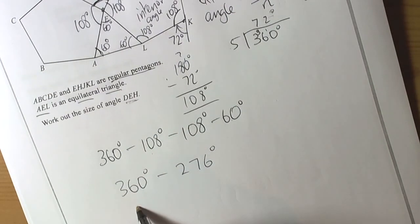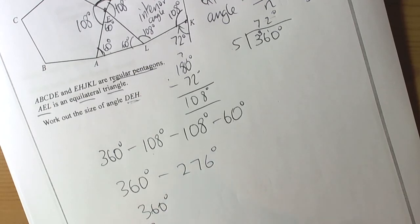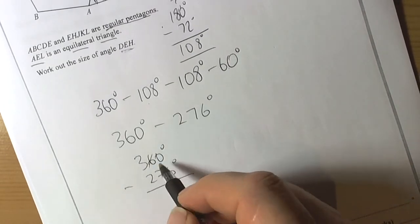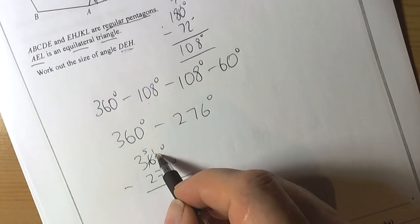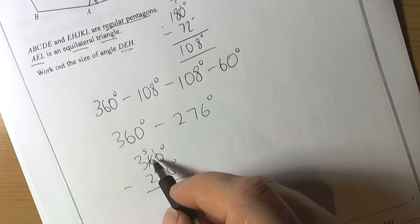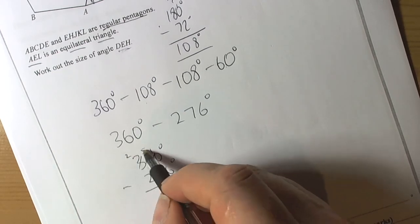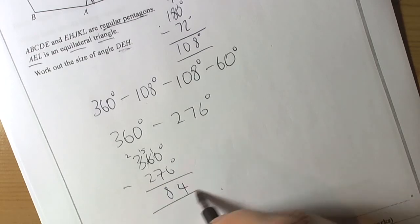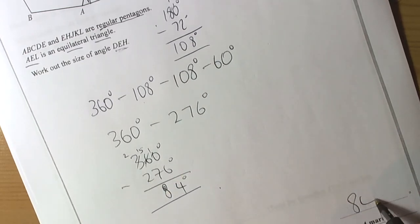There are lots of ways of doing it. It's a non-calculator paper, so if you haven't got a technique, then at least write down the takeaway sum. Borrowing again to make that 10, because we can't do 0 take away 6, so 10 take away 6 is 4. 5 take away 7, can't do that, so we can borrow 100 from there to make that 15 tens. 15 take away 7 is 8, and 2 take away 2 is nothing. So the answer is going to be 84 degrees.